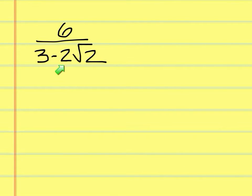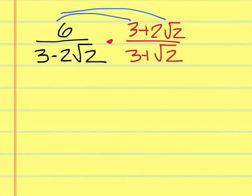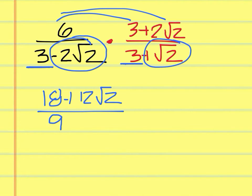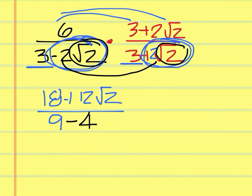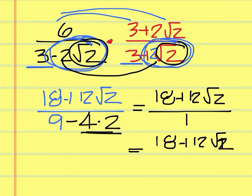On this problem the difference is that we have an extra number coefficient in there, but you still do it the same way. Multiply the top and the bottom by the conjugate: 3 plus 2 square root of 2. When I multiply, I come up with 18 plus 12 square root of 2. On the bottom, 3 times 3 is 9, and 2 times 2 is 4, and square root of 2 times square root of 2 is 2, so that's 4 times 2 equals 8. So 9 minus 8 is 1, and it just cancels out. The answer is 18 plus 12 square root of 2.